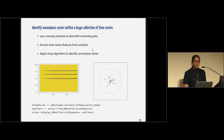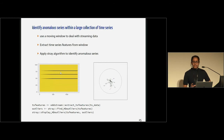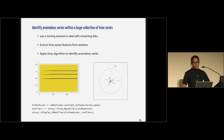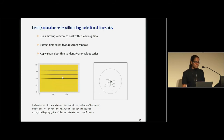Our real focus is on identifying anomalies within a large collection of time series. How can we take this idea to identify anomalies within a large collection of time series? Again, we are dealing with streaming data, so I'm using a moving window. Then I extract time series features from the time series, converting my original problem into a high dimensional space. We developed Stray for high dimensional data, and once I apply the Stray algorithm, it can identify the anomalous points. These anomalous points correspond to the anomalous time series within my large collection. That's the whole idea of the second package, Stray.